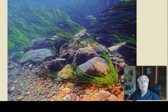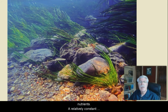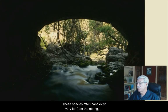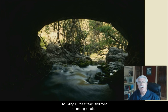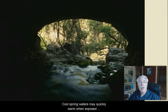Because springs are exposed to sunlight, aquatic plants play a role in providing nutrients. A relatively constant temperature, at least near spring openings, allows species to adapt to a highly specialized lifestyle. These species often can't exist very far from the spring, including in the stream and river that the spring creates. Water temperatures, in particular, may limit a species adapted to a spring ecosystem from wandering beyond the vicinity of the spring itself. Cool spring waters may quickly warm when exposed to Texas's hot weather. As a result, spring ecosystems tend to be small, allowing only relatively small populations of any one species to survive.